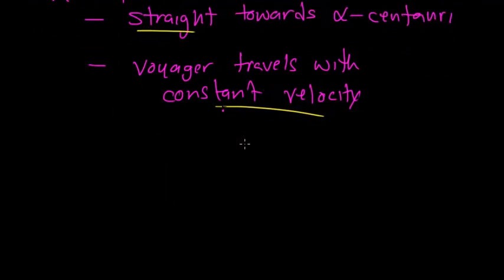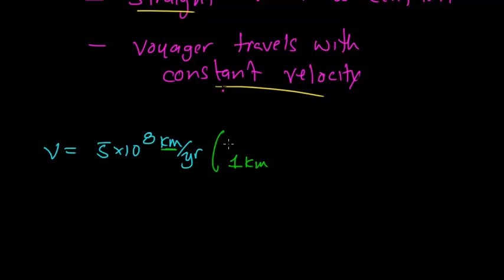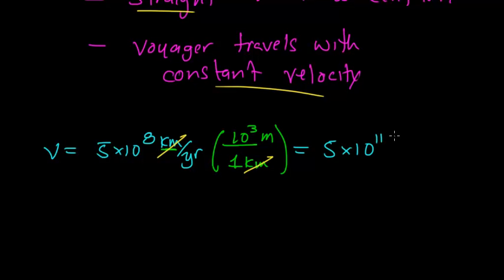The first thing we're going to do is take a look at the Voyager spacecraft's velocity in units of meters per year. The velocity of the Voyager spacecraft was 5 times 10 to the 8th kilometers per year. Let's make a simple conversion and just convert this unit of kilometers over to units of meters. Remember that 1 kilometer is equal to 1,000, or 10 to the 3rd, meters. The unit of kilometer cancels out, and we get a velocity of 5 times 10 to the 11th meters per year — meaning the Voyager spacecraft travels 5 times 10 to the 11th meters every single year.